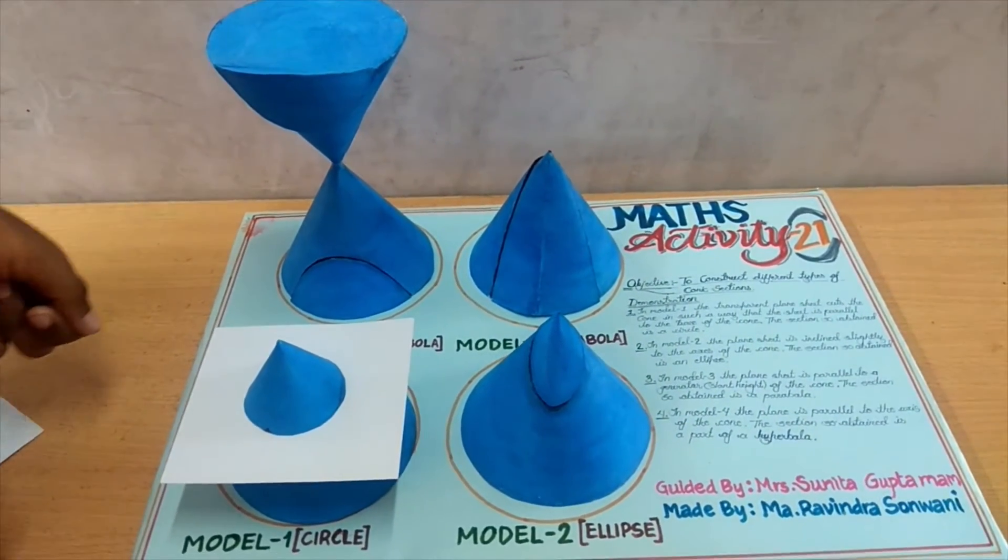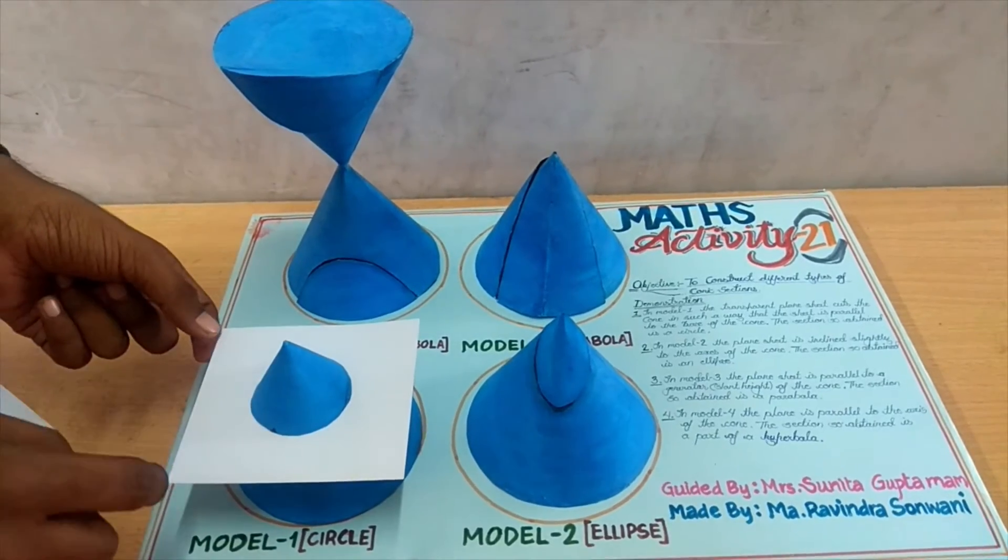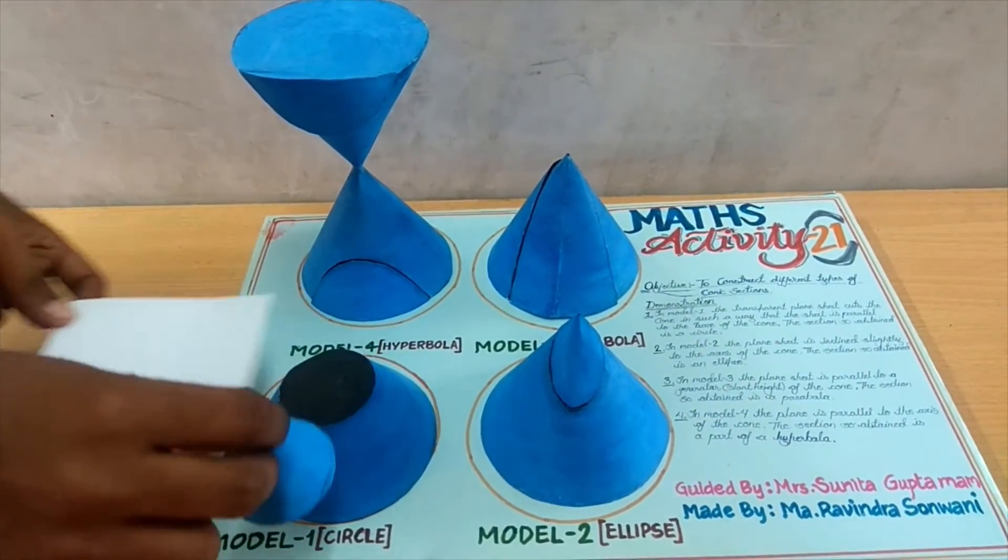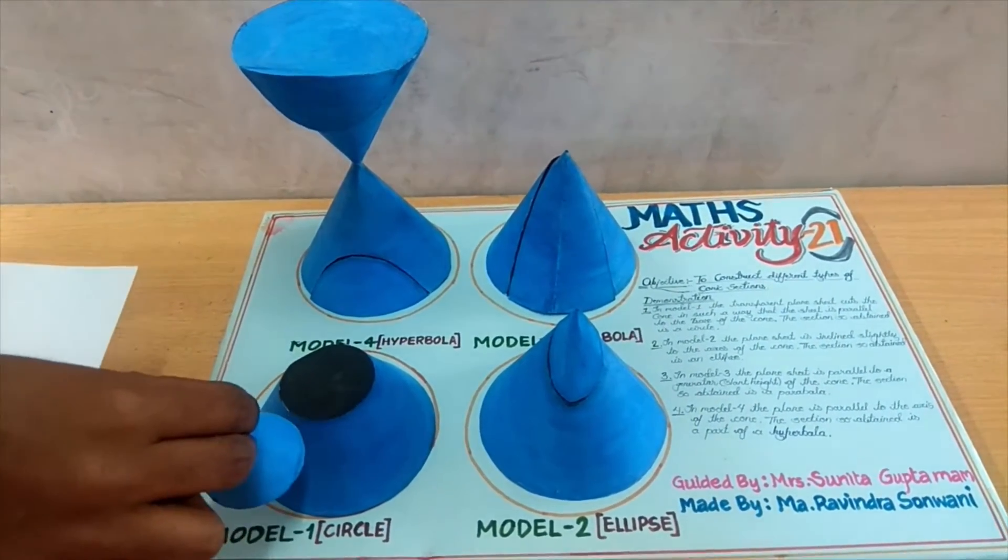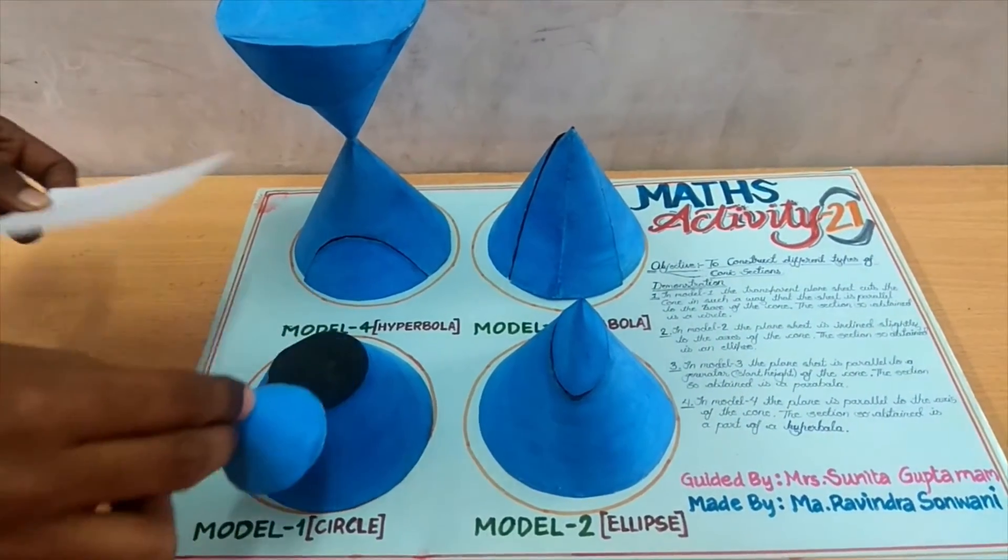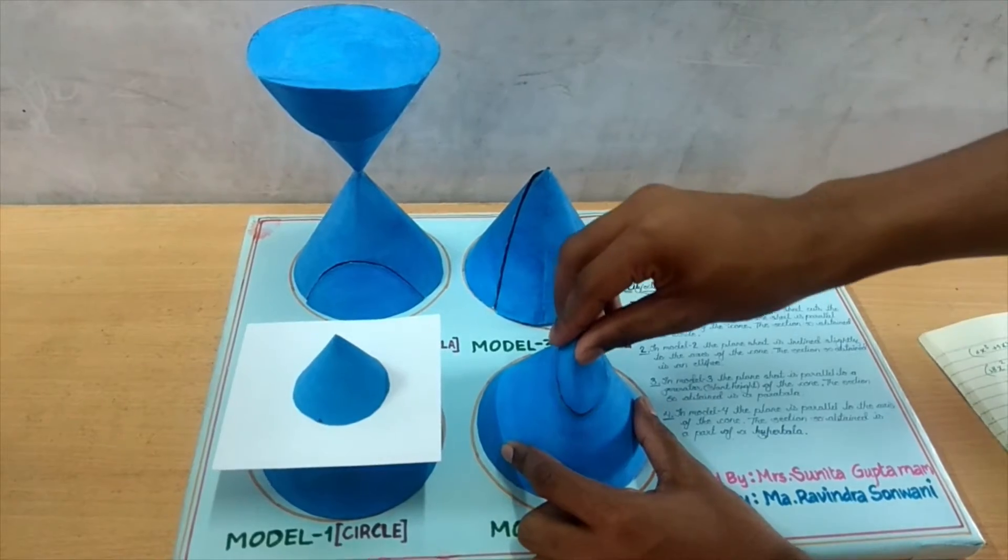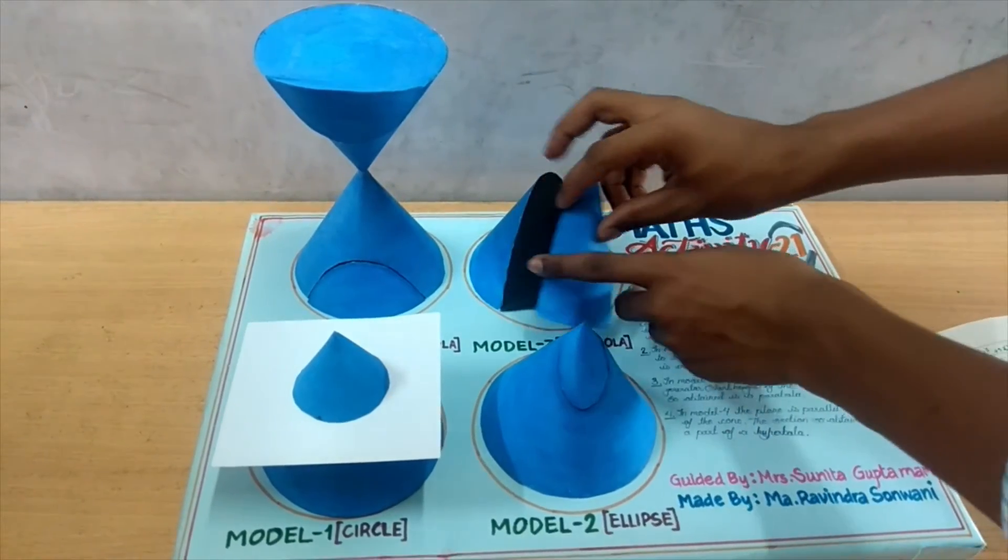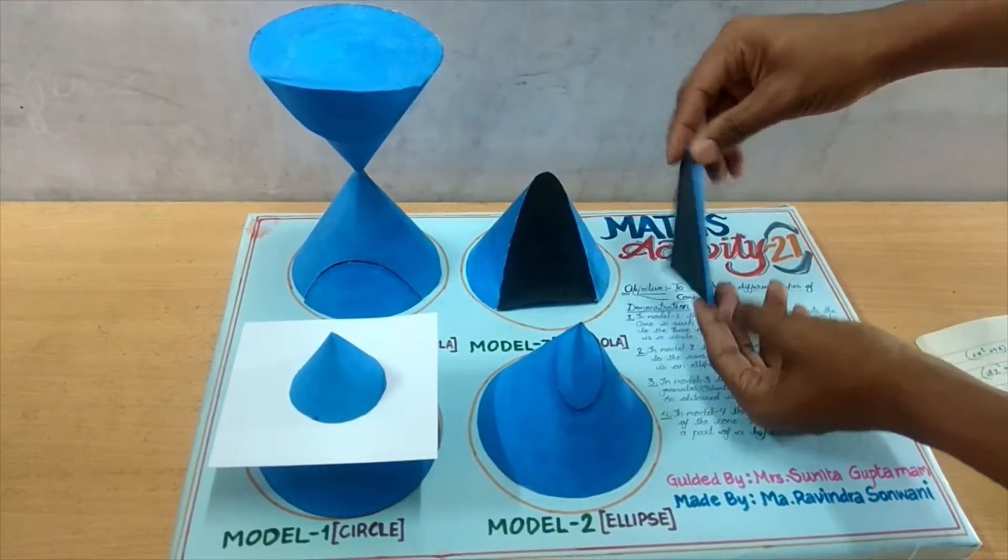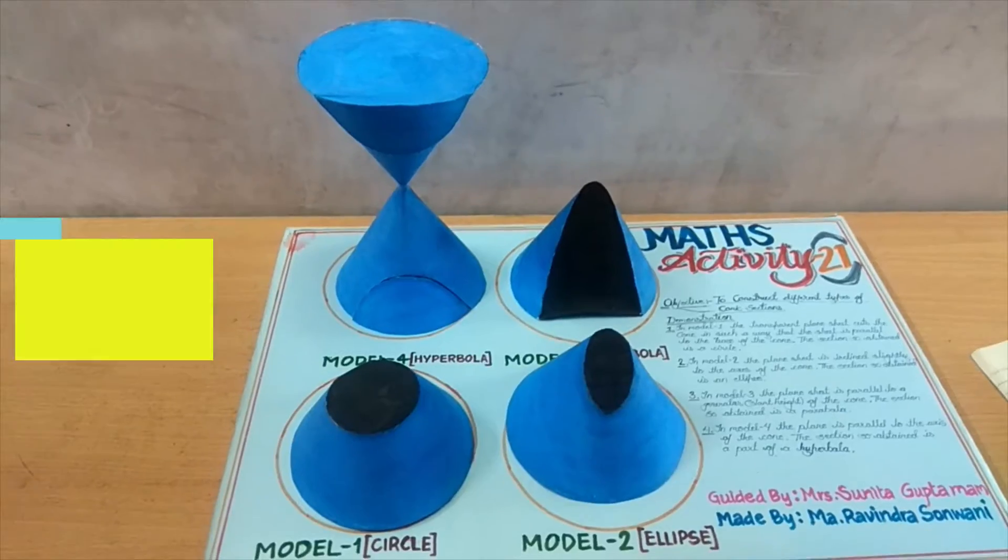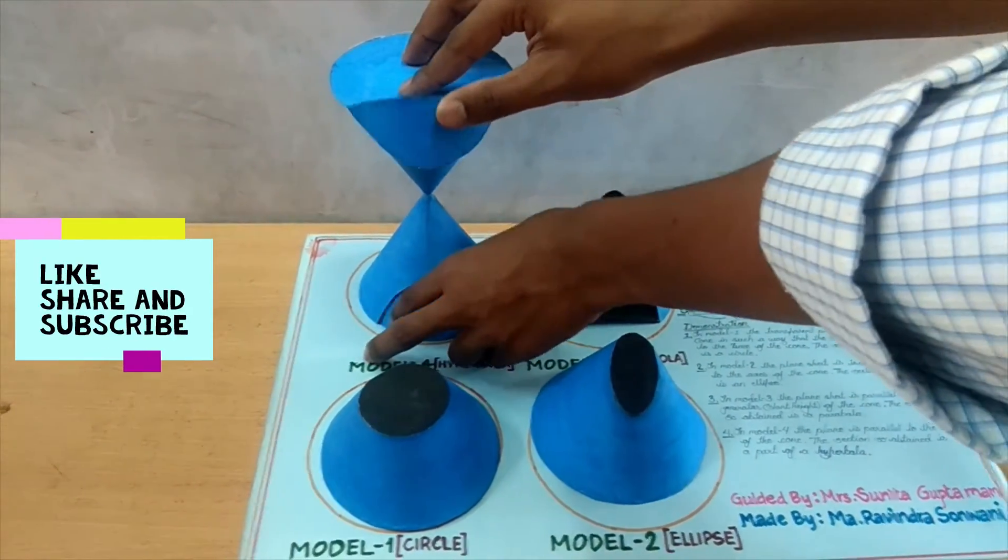If we take the intersection of a plane with a cone, the section so obtained is called a conic section. First one is circle, second is ellipse, third is parabola, and fourth is hyperbola.